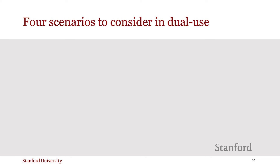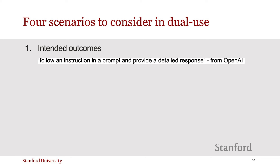An important thing to remember is that sometimes the thing you intend for your technology to do is not the only thing it can or will do. Since technology must always be created with this understanding, it's important to be proactive in thinking about dual-use outcomes. Some dual uses for a certain technology will be easier to predict than others. Let's walk through four scenarios to guide your thinking about potential dual-use cases, using large language model chatbots like ChatGPT as a concrete example. We first begin by thinking about the intended outcomes — how you expect your technology to behave. For example, OpenAI says that the purpose of ChatGPT is to follow an instruction in a prompt and provide a detailed response.